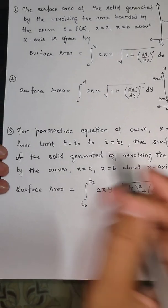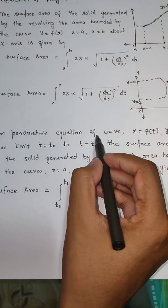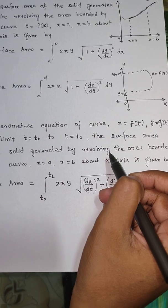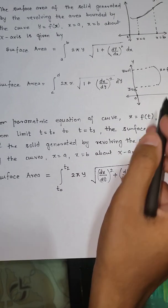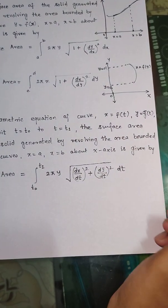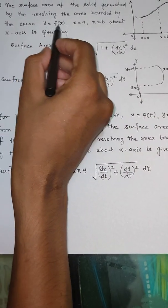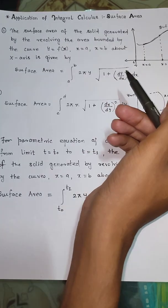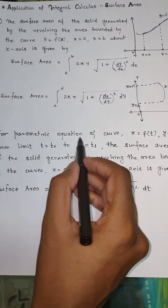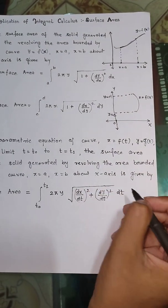One remark I would like to make: the surface area formula for a parametric equation of a curve is very easy to use compared to the formulas for y = f(x) about the x-axis or x = f(y) about the y-axis. For example, the equation of an asteroid is very lengthy in Cartesian form, but with the help of parametric equations it is very easy to find the surface area.